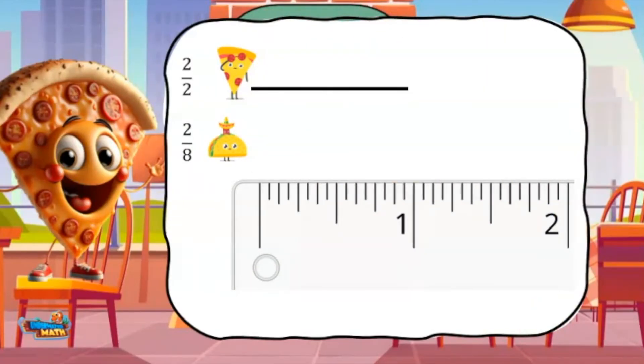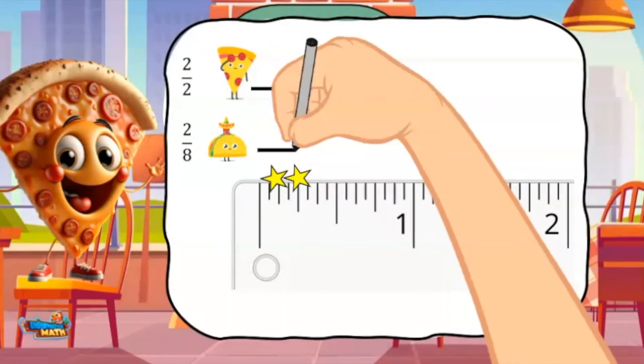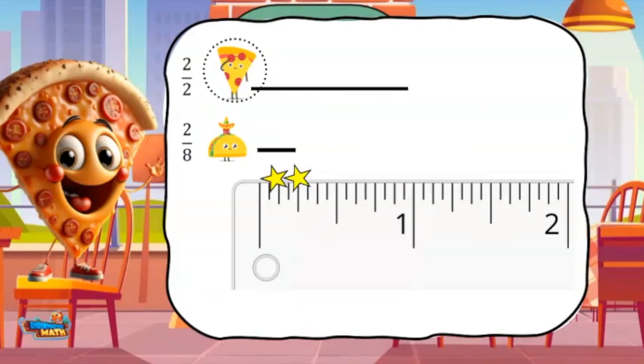Here is his location. Taco Man ran 2/8 of an inch. His location is represented like this. Little Pizza Man ran the furthest. Look, the numerators are the same and the fraction with the smaller denominator is greater.